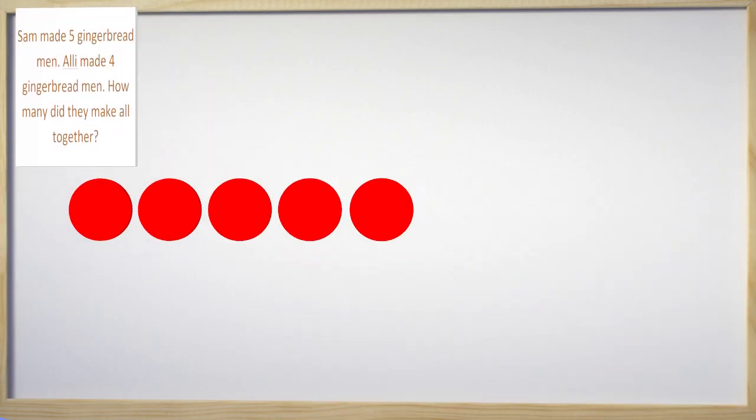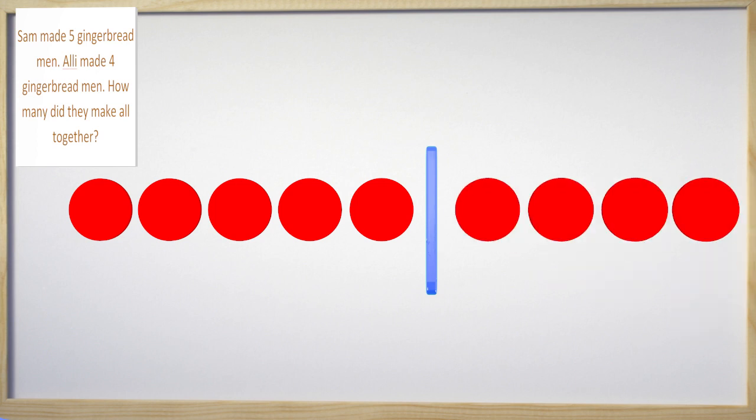We know that Sam made five gingerbread men, so we have five circles here. Now I will put a break apart line before I start drawing the circles that Allie made. Allie made one, two, three, four gingerbread men.